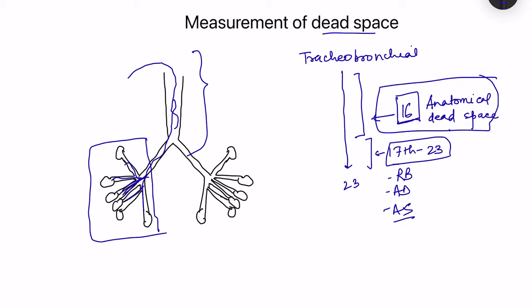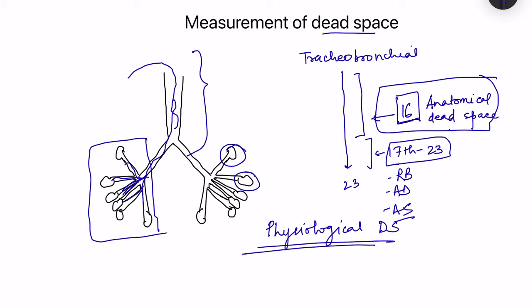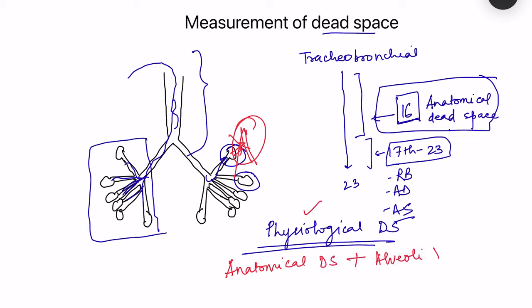There is another kind of dead space known as physiological dead space. Despite the name, there is nothing physiological about it — it happens in pathological conditions where certain areas in the respiratory unit receive airflow but have no perfusion. If perfusion is not there, gas exchange will not take place. These are areas where ventilation is present in the respiratory unit but perfusion is not — a kind of wasted ventilation. Physiological dead space is therefore anatomical dead space plus the alveoli which are only ventilated and not perfused.